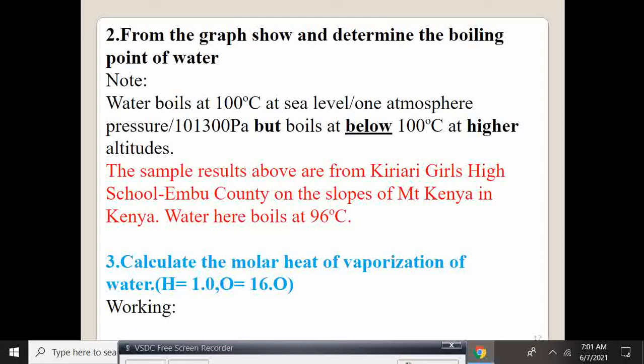So if a student at Kiariai Girls gets 96, we don't expect another student in Mombasa, whereby they are at sea level, to get 96. For them, they may get higher than 96 because Mombasa is at a lower altitude.